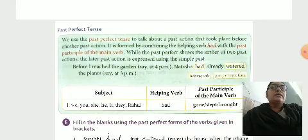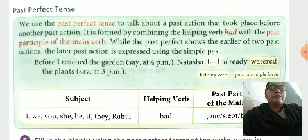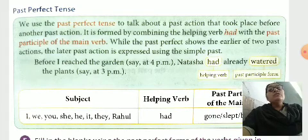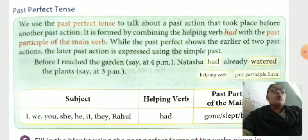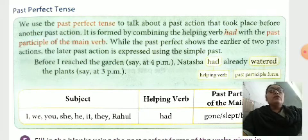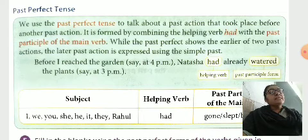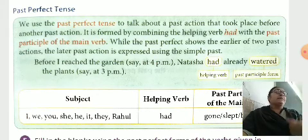In that chapter, the new topic is past perfect tense. We use the past perfect tense to talk about a past action that took place before another past action. It is an action already started before another past action.